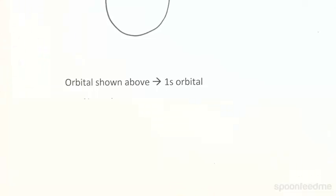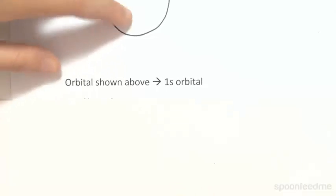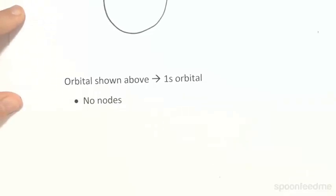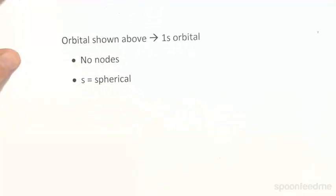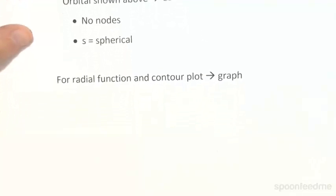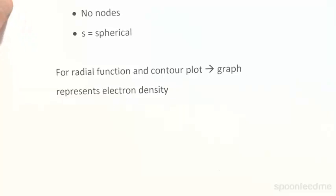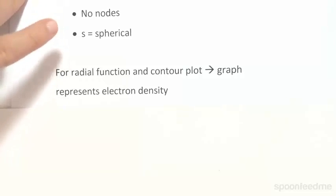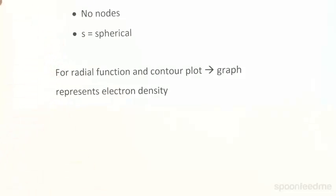We'll go further into detail regarding the numbering of the orbitals — what the '1' means — but for now, just know that S means spherical. This kind of orbital has no nodes. For a radial function and contour plot, the graph represents electron density: the closer to the nucleus, the higher the electron density, and the further you get, the lower the electron density. Gradient graphs do this as well, where the darkest regions show the highest electron density and the lightest regions show the lowest.